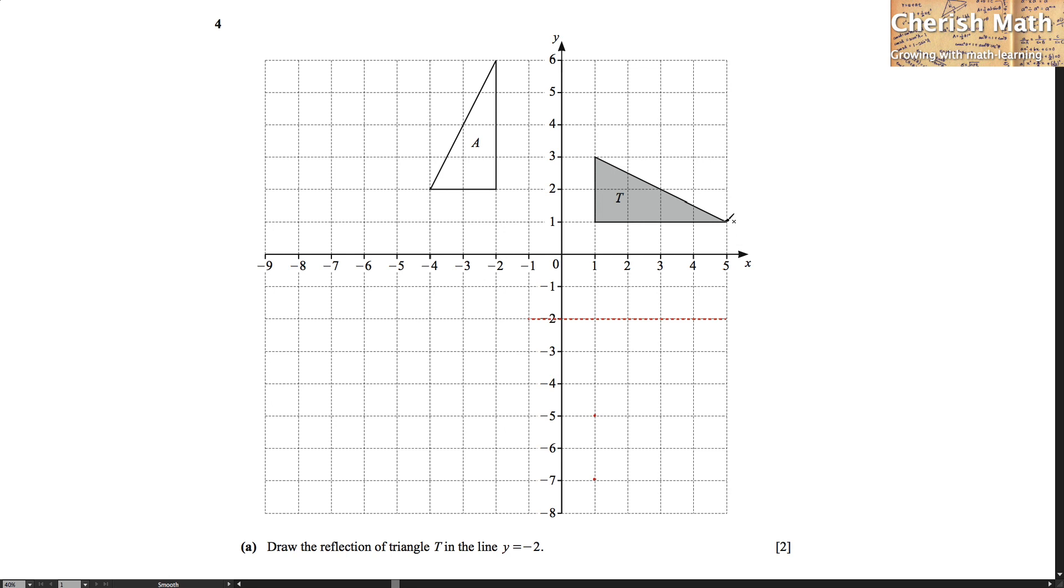And for this vertex it takes one, two, three units. And we count three units from the line y equals negative 2: one, two, three. So it is landed here.